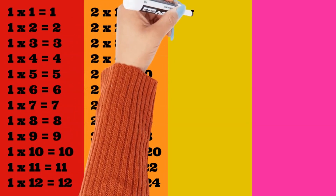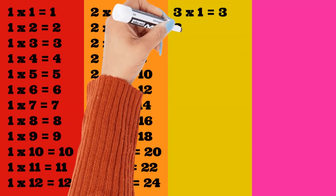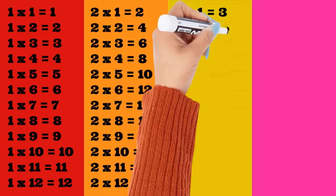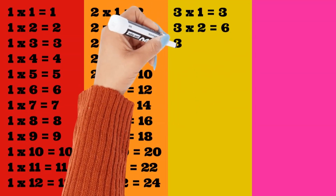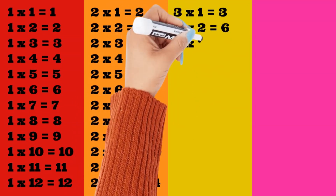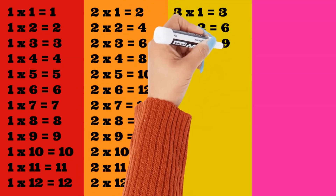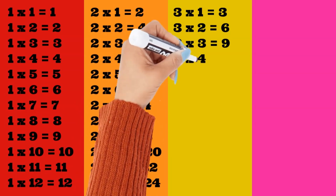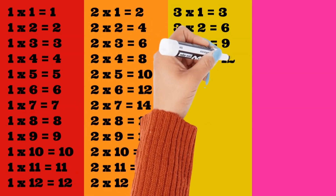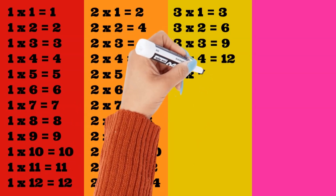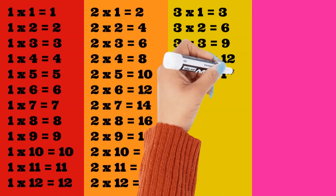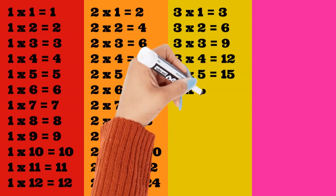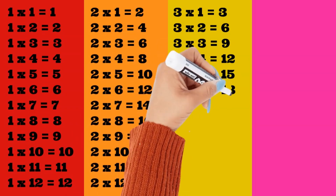Three times one is equal to three. Three times two is equal to six. Three times three is equal to nine. Three times four is equal to twelve. Three times five is equal to fifteen. Three times six is equal to eighteen.